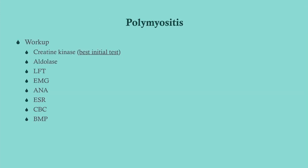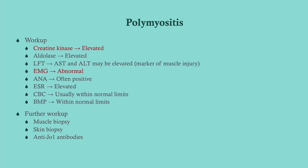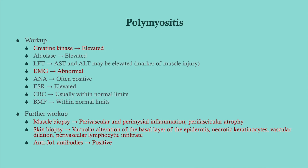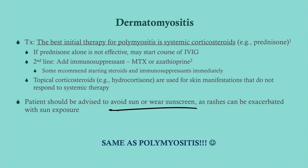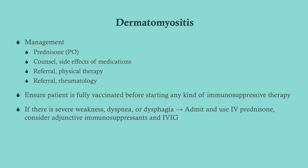The workup and findings for dermatomyositis are the same as polymyositis. The key difference with dermatomyositis is that you can also do a skin biopsy. For Steps 2 and 3, you don't need to interpret biopsy findings. Treatment is largely the same; for persistent skin rash, add topical corticosteroids and advise the patient to avoid sun exposure or wear sunscreen, as some rashes are sun-sensitive.